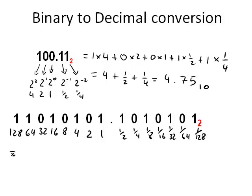Alright, so if we multiply, we get 128 plus 64, and I will leave out anything that multiplies by 0. We've got 16 here, we've got 4, we've got 1,